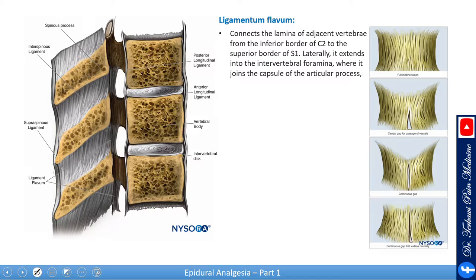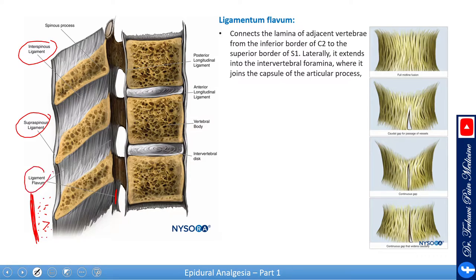Now let's talk about the ligamentum flavum. If you look at the layers from posterior to anterior in a midline approach, you pass through skin, subcutaneous tissue, supraspinous ligament, interspinous ligament, ligamentum flavum, and then dura. The ligamentum flavum is a very important landmark when performing neuroaxial procedures, whether epidural or spinal.